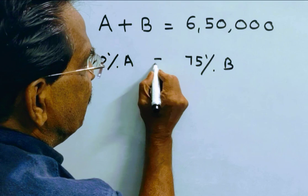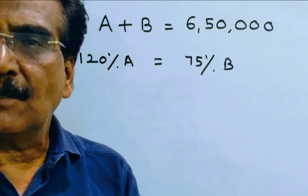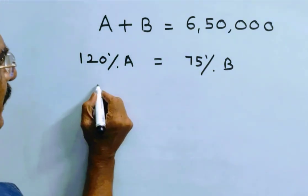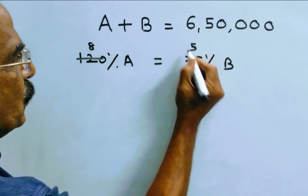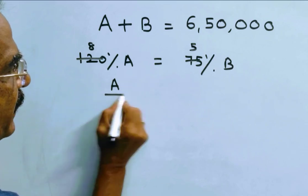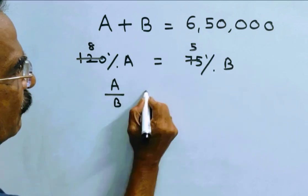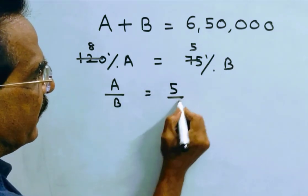It is given that the selling price of both the cars are equal. It implies 15 8s, 15 5s. So A by B is equal to 5 by 8.